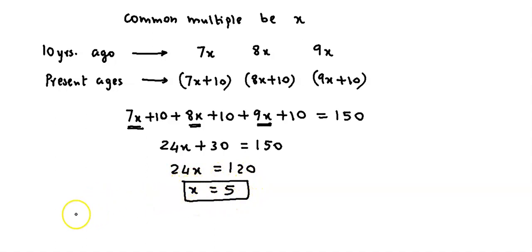And we have asked their present ages. Therefore, we could say the present ages are, the first person is 7x plus 10, 35 plus 10. This is 45 years.